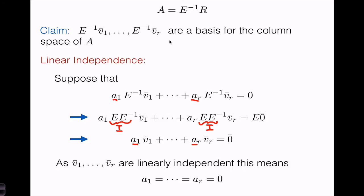We've shown that they span the column space and that they're linearly independent. So the dimension of the column space of A is equal to r, which is the same as the dimension of the column space of R. This finishes the second step, and completes the proof that row rank is equal to column rank.